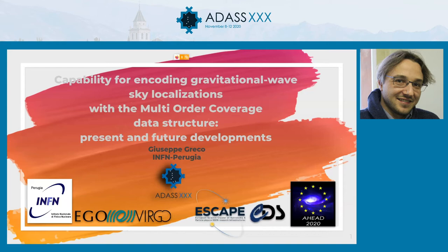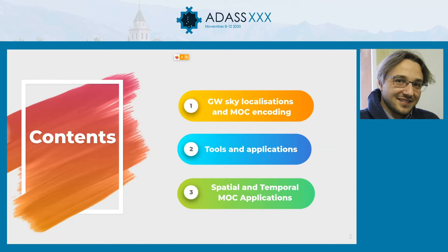In my talk I will focus on the capability to describe gravitational wave sky localizations using the so-called multi-order data structure. It's part of a larger research program supported by two main European projects: ESCAPE and AHEAD. In particular, the last one is mainly designed for high-energy missions. I divided my talk into two main parts: a short introduction to GW sky localizations and the latest results from LIGO and Virgo, then a few protocol examples and applications in a real context, and finally a discussion of the benefit of encoding space and time simultaneously — the so-called space-time MOC — and possible applications for the next generation of interferometers.